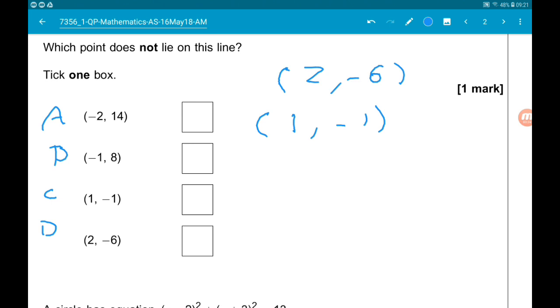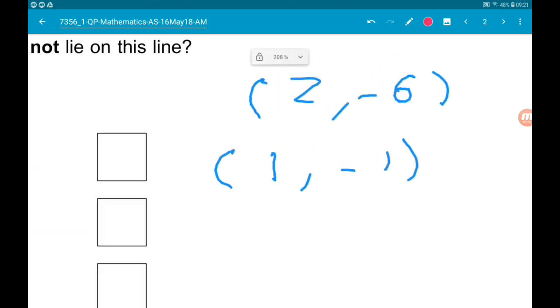This time we are subtracting 1 from the x coordinate and we are adding 5 to the y coordinate. So this time we're working from the right to the left.